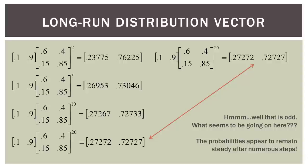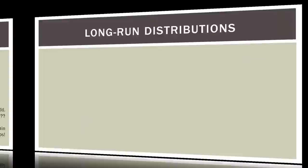The method we used before was kind of roughing it — we just put this in a calculator and changed the exponent over and over again until the probabilities stopped changing. We call those the steady-state probabilities. In this video, we're going to talk about how to actually solve for them exactly using matrix operations and things of that nature.